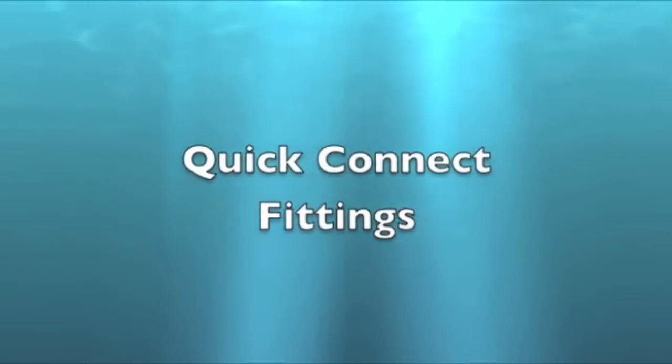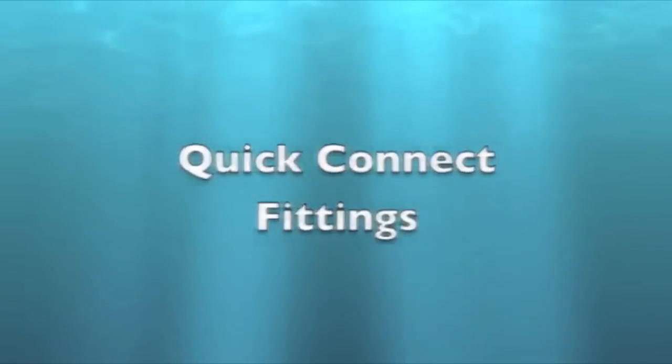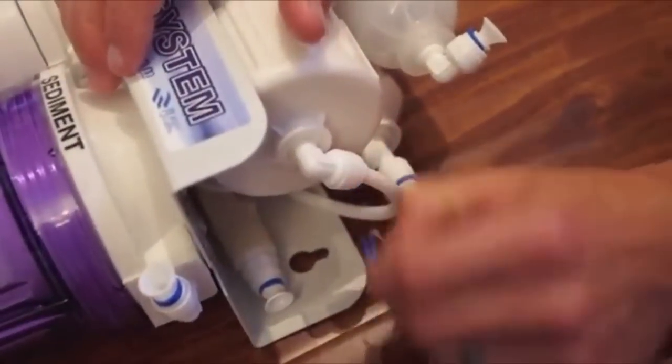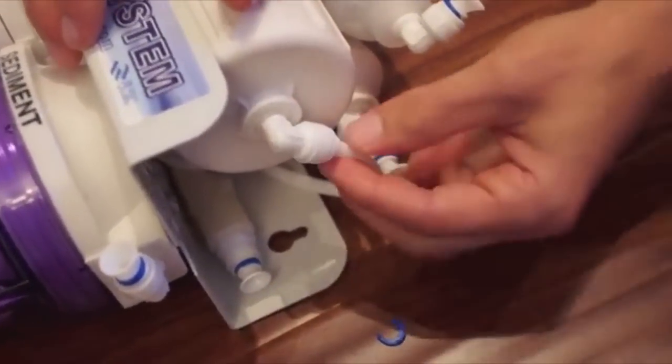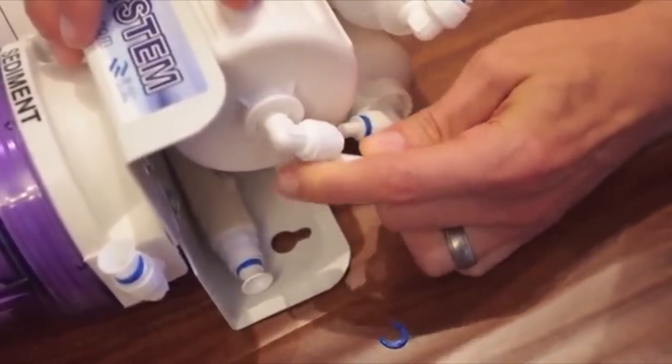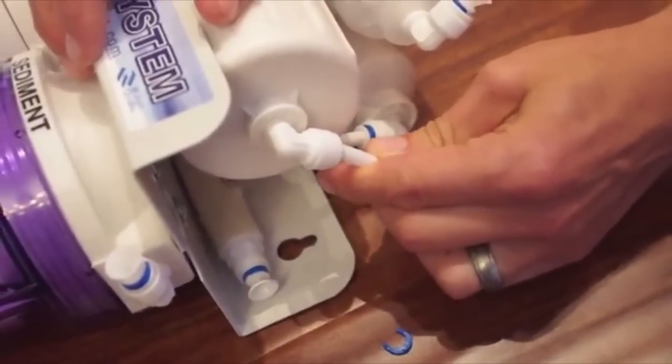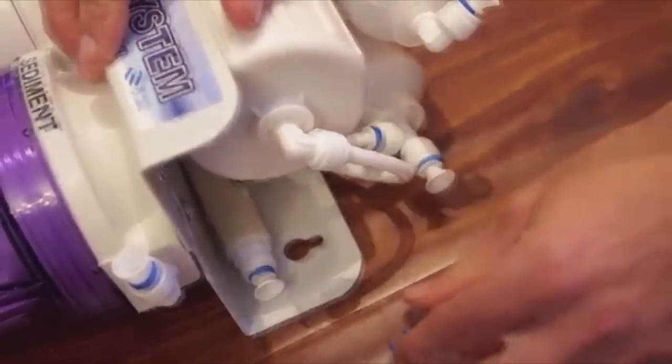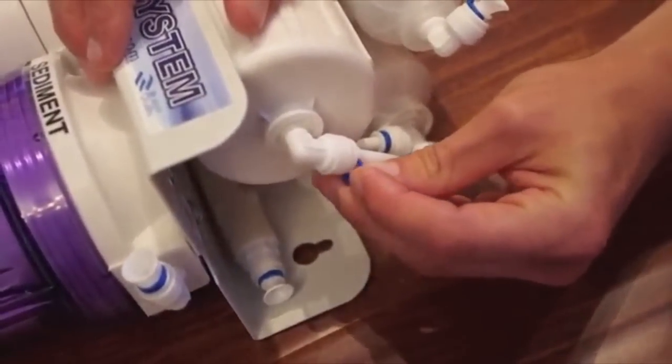Quick connect fittings. To remove the tubing, first pull out the blue clip. Then compress the fitting and pull out the tube. To install, insert the tubing and then install the locking clip.